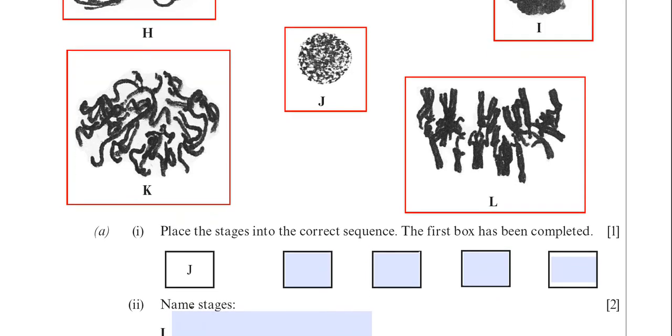So the first question is now asking you to place the stages into the correct sequence by adding the letter into these boxes. This is a basic question that is always asked. You do need to remember the order of the stages of mitosis. In this question you have to interpret the images to find out what stages they are. So they're giving you J as the starting point which is interphase which is correct. After interphase it's prophase. So the answer there would be K.